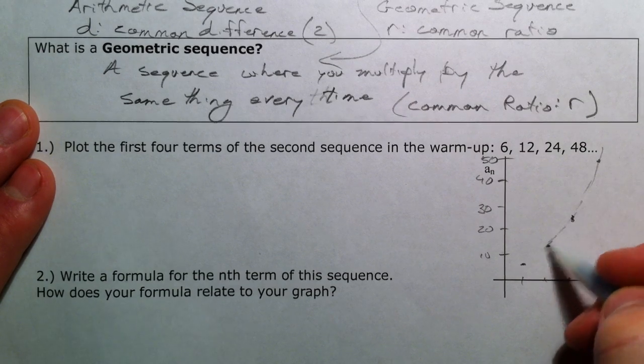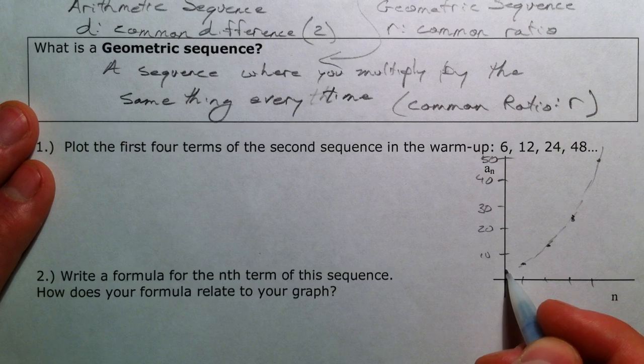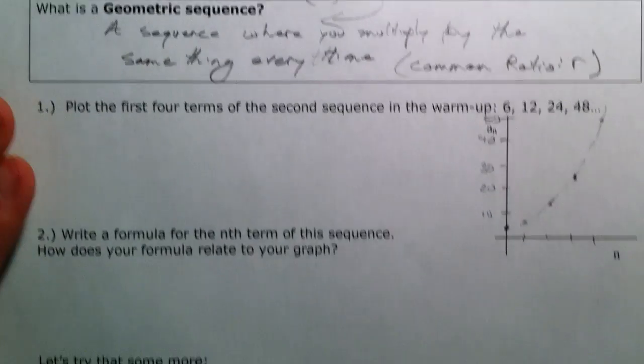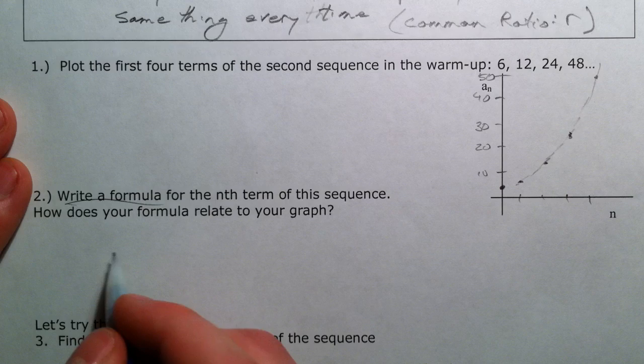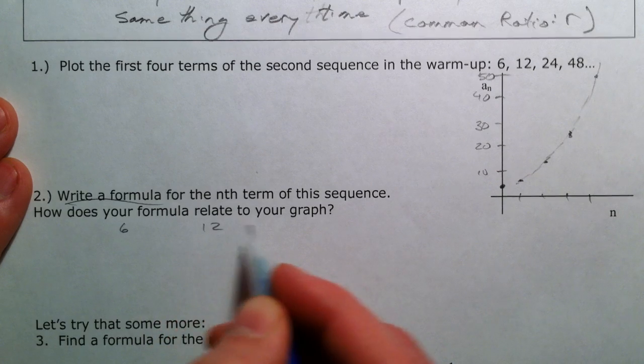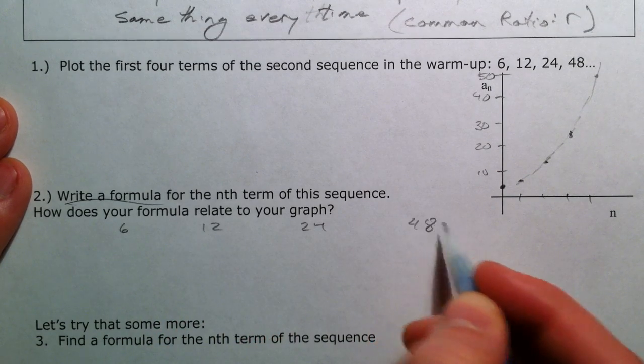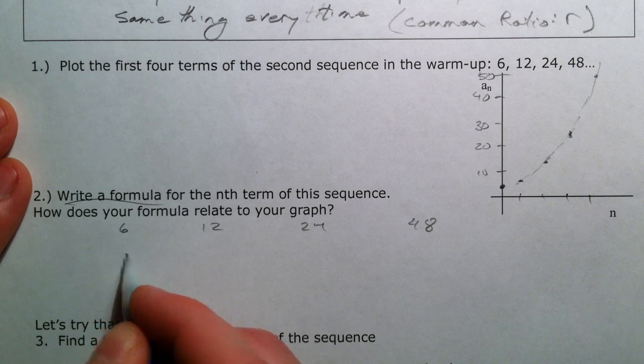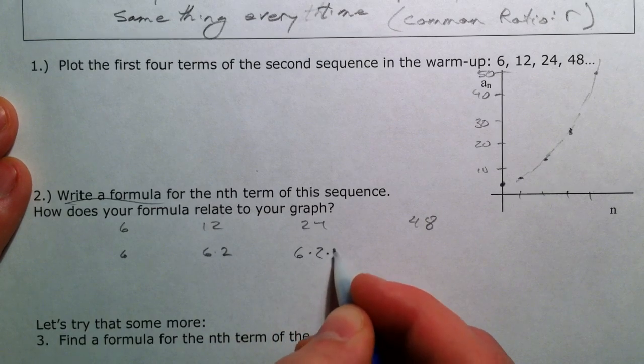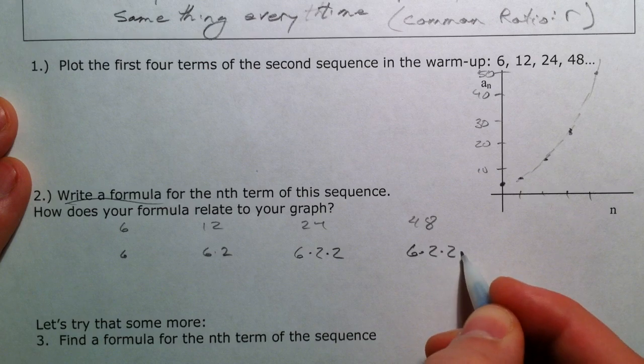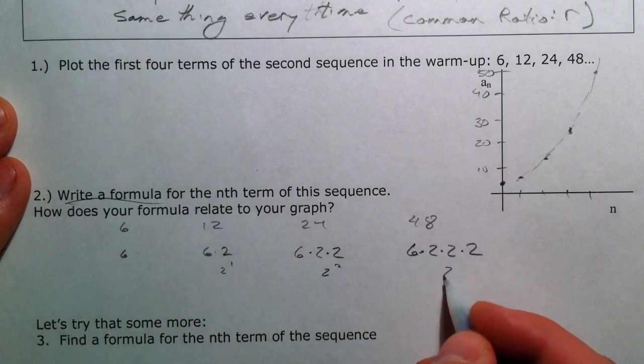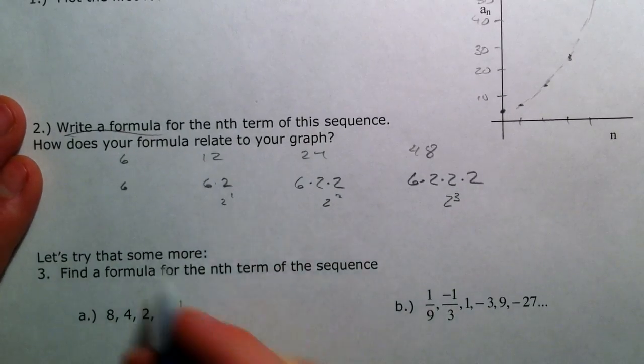If you continue the pattern backwards, the y-intercept here would be 3, which is going to be very critical in this one. Because what I want to look at is we're going to write a formula for this. And our 6, 12, 24, 48 is just 6, this is 6 times 2, this is 6 times 2 times another 2, 6 times 2 times 2 times 2. And so this is 2 to the first, 2 to the second, 2 to the third.